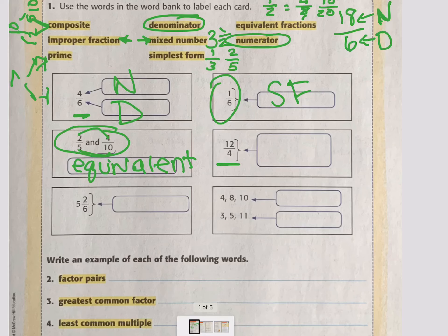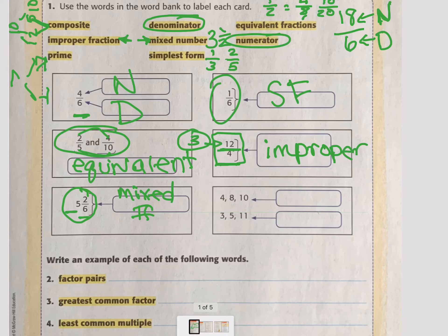Next to it, we have 12 out of 4. When the big number's on top, that makes it an improper fraction. What would the mixed number for this be? Do you guys remember how to figure that out? Well, 12 divided by 4 is 3. That would be the number it represents. Okay. 5 and 2/6, we have a whole number and we have a fraction. That means it's a mixed number.